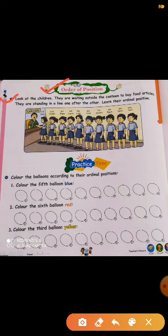Look at the children. They are waiting outside the canteen to buy food articles. We canteen ke bahaar kuch khanne ka samaan kharidne ke liye wait kar rahe hain. They are standing in a line one after the other. We ek ke baad ek line bana kar khadhe huye hain.